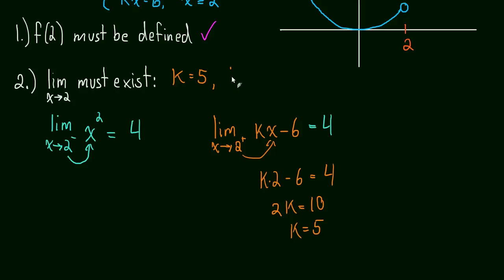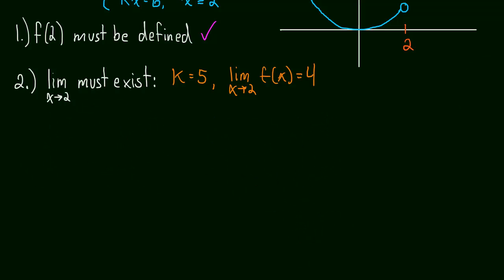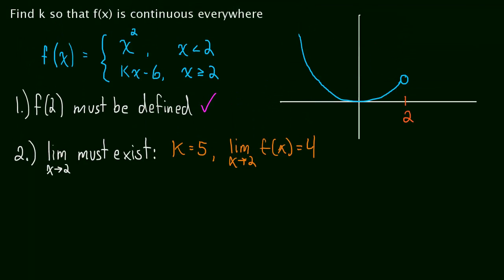When k is equal to 5, the limit as x approaches 2 of f of x is equal to 4. So, let me erase that work now. So, we've found a k that makes that limit exist. And now, to ensure that it's continuous, we just have to meet one more condition.